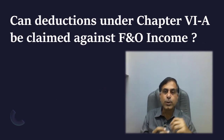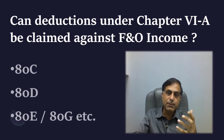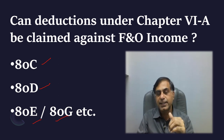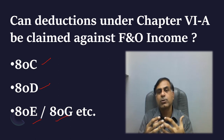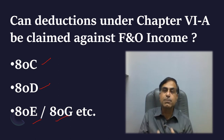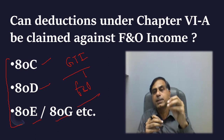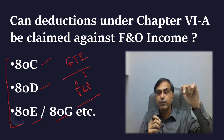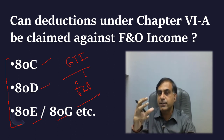Another interesting issue I wanted to take up is: can deductions under Chapter VI-A also be claimed against F&O income? These include deductions like 80C, 80D, 80E, 80G — such as LIC contributions, medical insurance premium, education loan interest, or donations to an entity. My dear friends, all these deductions are claimable against gross total income. And if your gross total income includes any positive F&O income, naturally all these deductions can also be claimed against it. However, these are not claimable directly against F&O income computation — they are allowable against the gross total income computation.